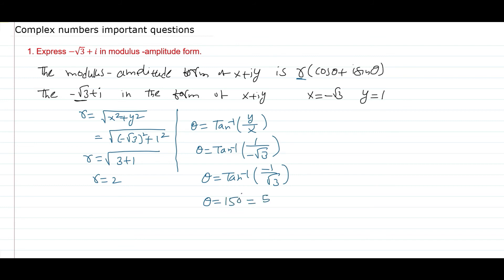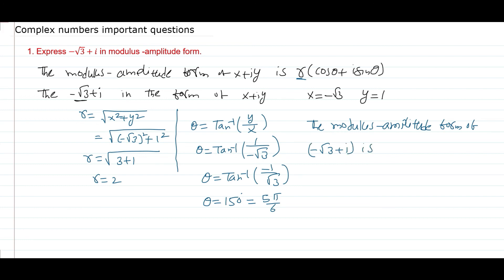Theta equals 150 degrees, which in radians form is 5π/6. Therefore the modulus-amplitude form of minus root 3 plus i is 2 into cos(5π/6) plus i sine(5π/6).